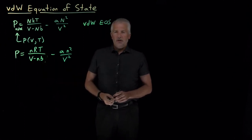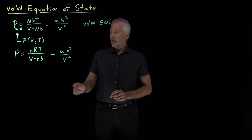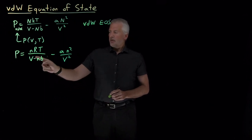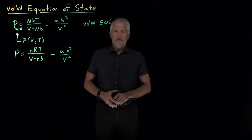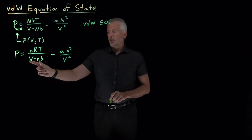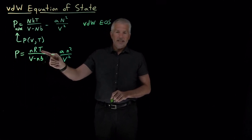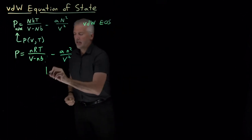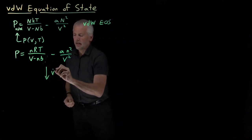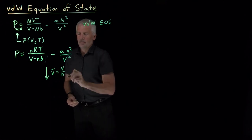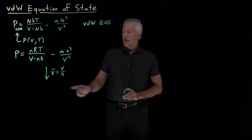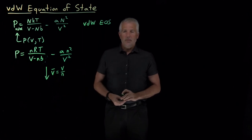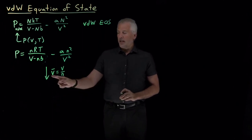I can make the equation one step more convenient still by noticing that the volume and the number of moles are extensive properties, while temperature and pressure are intensive. This equation becomes more convenient if I write everything in terms of intensive properties. To turn the volume into an intensive property, I need to think about the molar volume — volume divided by number of moles. So if I rewrite each V by dividing by n to write it as V-bar...